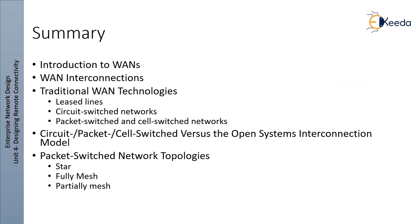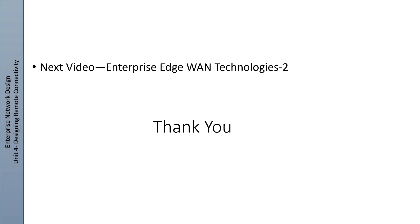In this lecture we covered introduction to WAN, WAN interconnection, traditional WAN technologies including leased lines, circuit switching, packet switch and cell switch networks, then circuit/packet/cell switch versus the OSI model, and packet switch network topologies: star, fully mesh, and partially mesh. In the next lecture we will discuss the remaining part of Enterprise Edge WAN Technologies, Part 2. Thank you very much, bye bye, have a nice day.